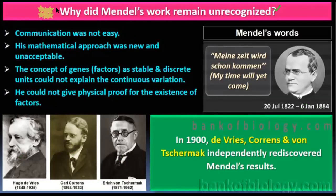Why did Mendel's work remain unrecognized? He is the father of genetics, yet his work was not understood in the initial phase. The reasons: he could not give physical proof for the existence of factors, the concept of genes was not understood, his mathematical approach was not acceptable, and communication at that time was not easy.